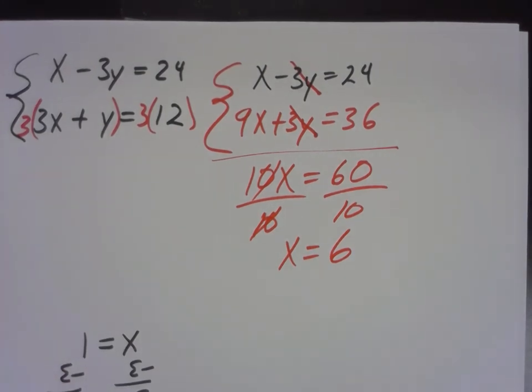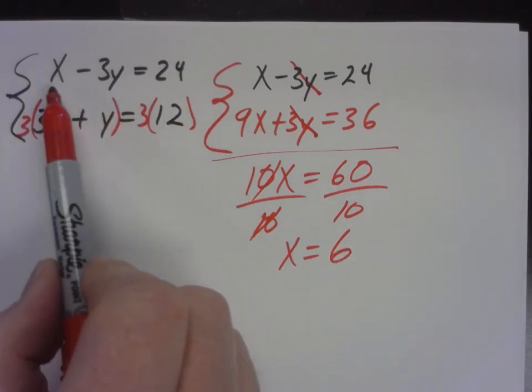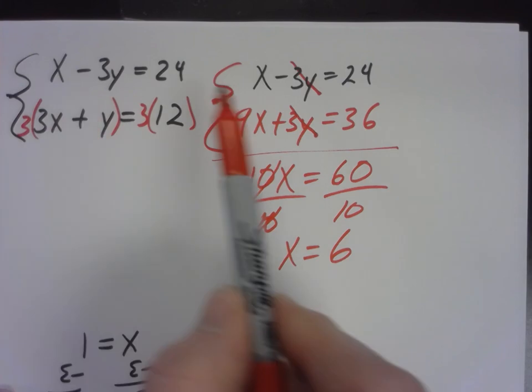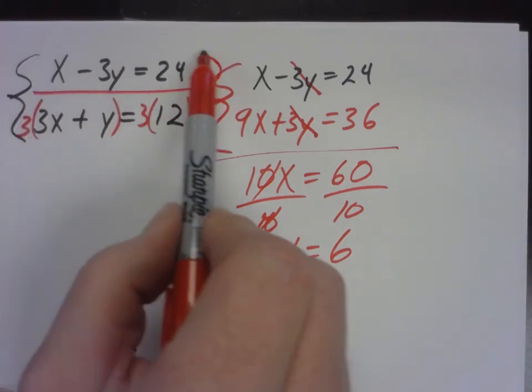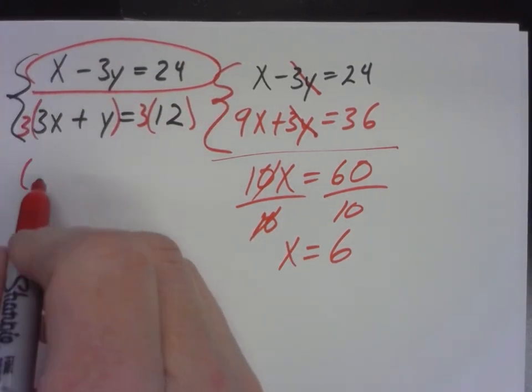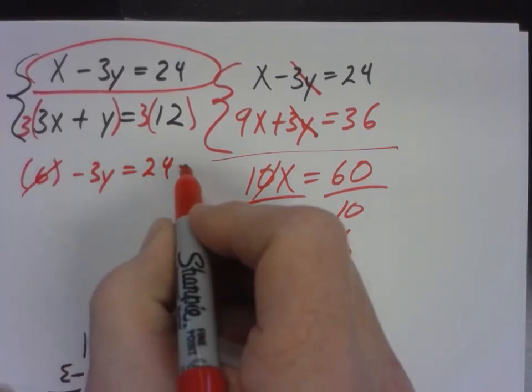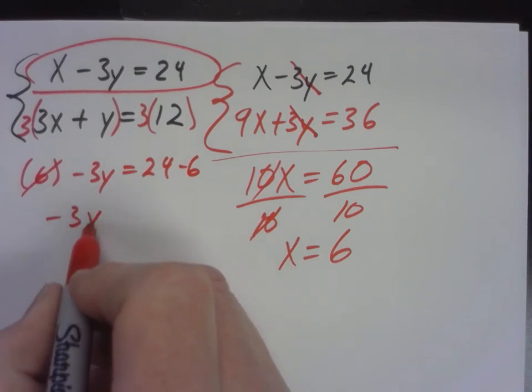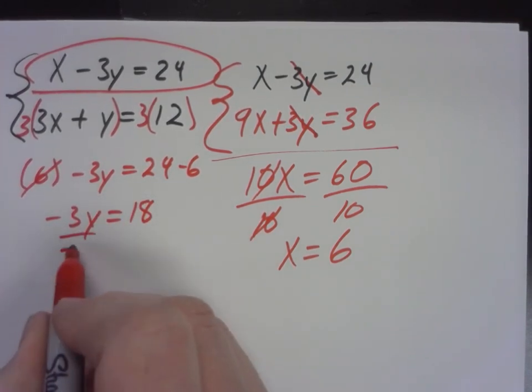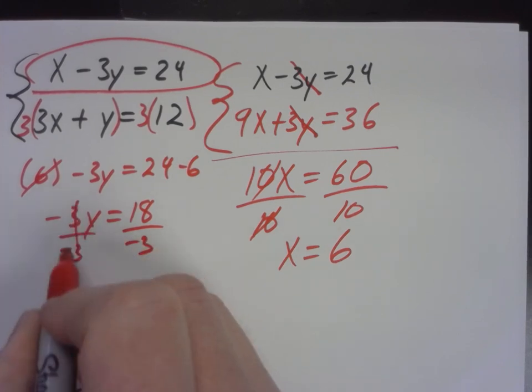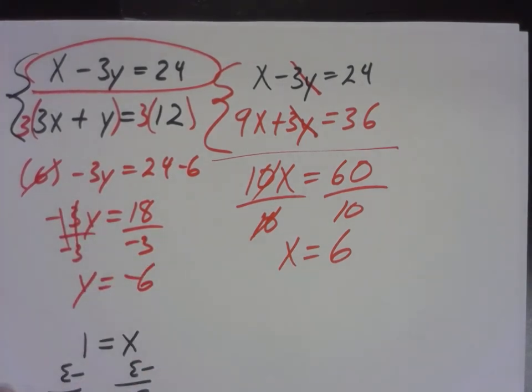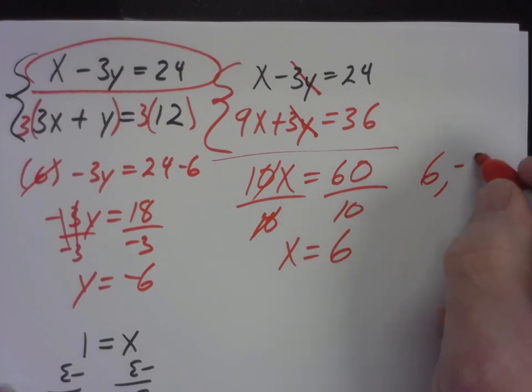Well, now what? Are we done? No, we need to plug it in. Where do I plug it back in? Yeah, and probably what we want to do is go back to one of the original equations. Whichever one's the simplest. I'm thinking right there. Right here I'm just going to put a 6. So if I subtract 6 from both sides, I get negative 3y equals 18. Divide by negative 3. And y equals negative 6. So here's our point, 6 comma negative 6.